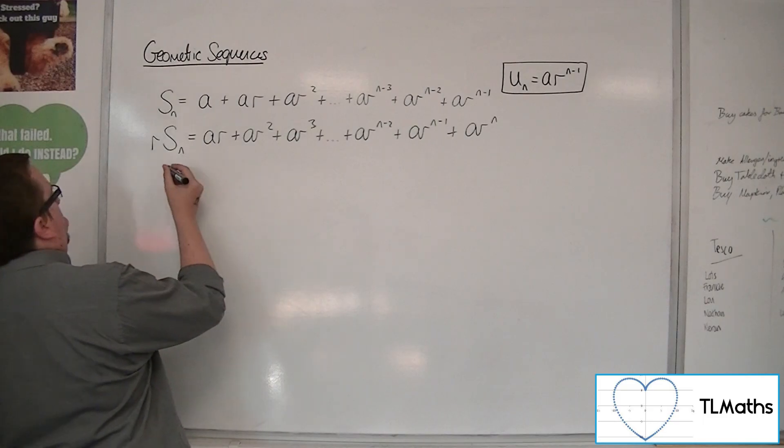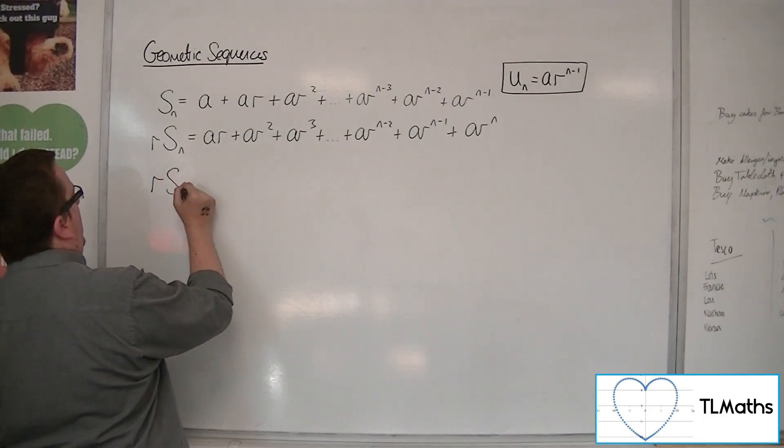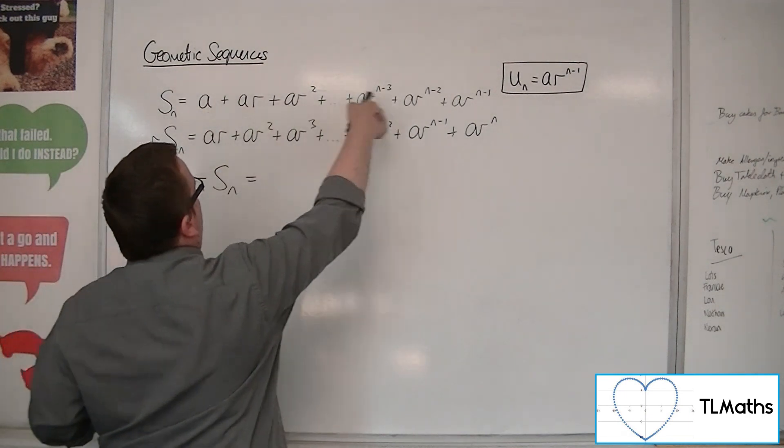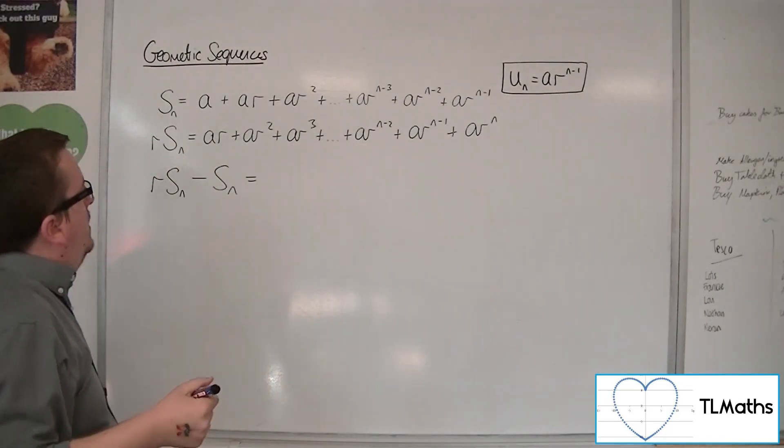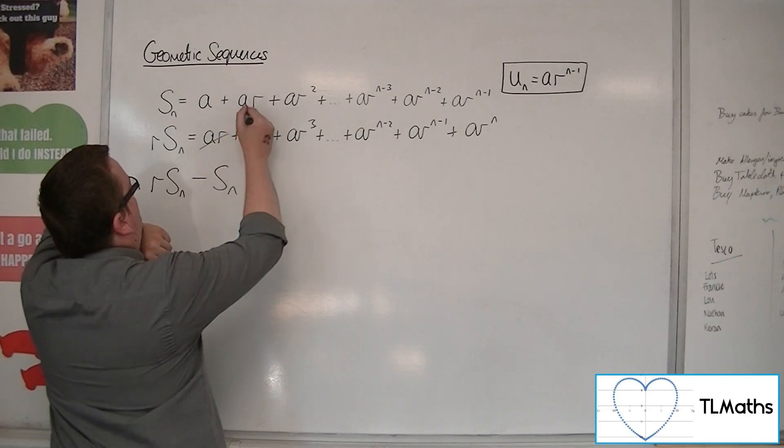So if I do r S_n take away S_n, so this line take away that one, then I'm going to get ar take away ar, so they cancel. ar squared take away ar squared, they cancel.